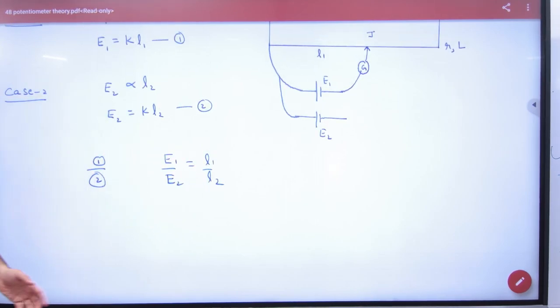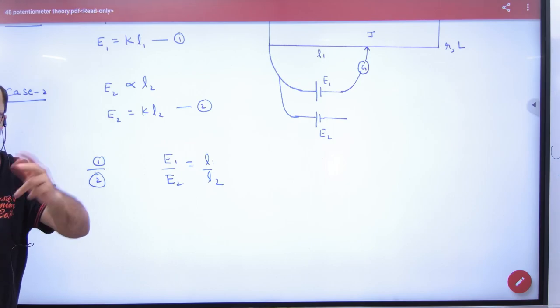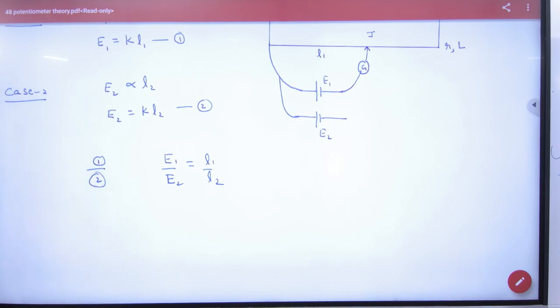So question comes to that, if you have case number 1, you have a battery, balancing length L1, and if you have a battery, balancing length L2. So what will be the ratio? E1 by E2 is L1 by L2.